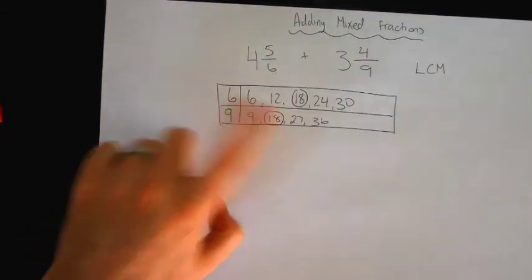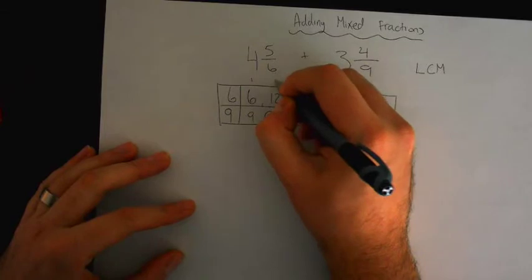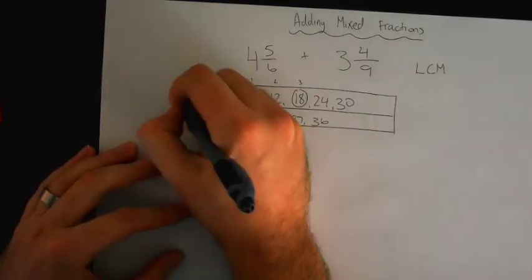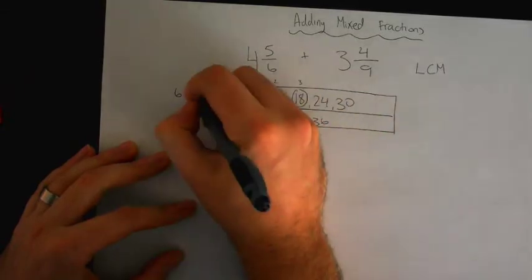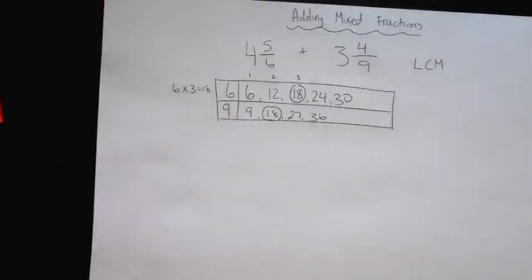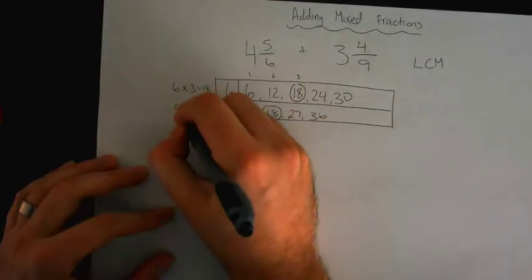So how do we get from 6 to 18 using multiplication? 6 times 3. 6 times 3. And then there's 1, 2, 3. So 6 times 3 equals 18. And then with 9, how do we get to 18 using multiplication? Yes. 9 times 2. Correct. So there's 1, 2. 9 times 2.